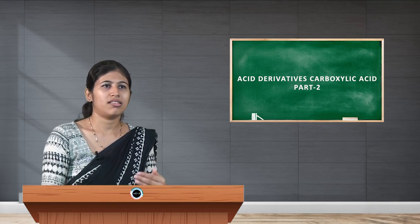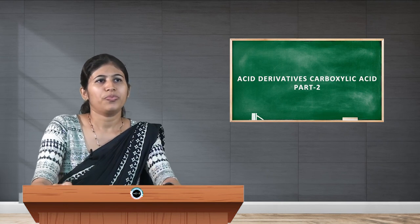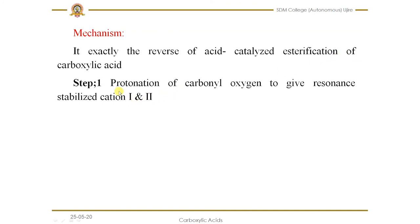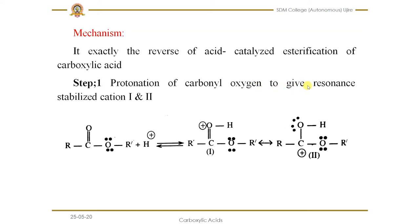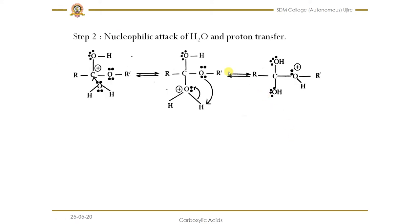The mechanism for ester hydrolysis can also be written in five steps — here shown in three — and it is exactly the reverse of acid-catalyzed esterification. In Step 1, protonation of the carbonyl oxygen gives a resonance-stabilized structure. The carbonyl oxygen accepts a proton from water or an acid, giving the protonated ester. Since it is unstable, the pi bond shifts, giving the lone pair to the oxygen and generating a positive charge.